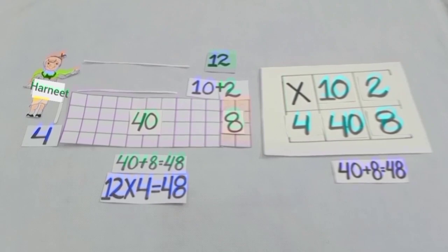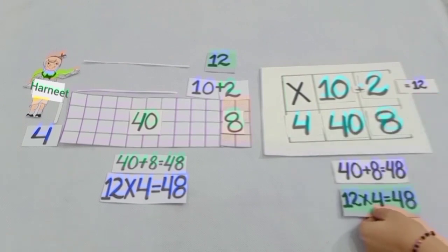Students, after adding 10 and 2, we get the number 12, and you know 12 into 4 is equal to 48.